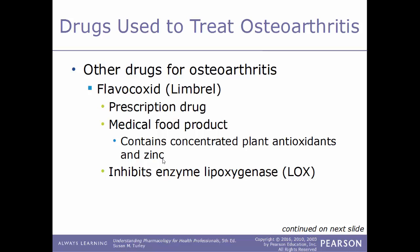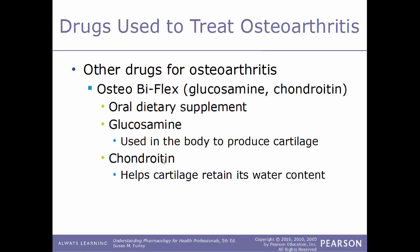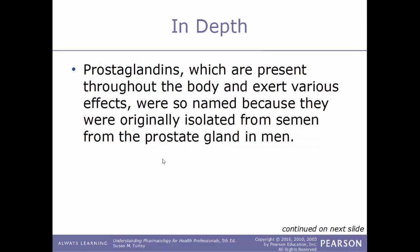Another drug used to treat osteoarthritis is flavocoxid, better known by its trade name Limbrel. This is a prescription medical food product containing concentrated plant antioxidants and zinc. It works by inhibiting the enzyme lipoxygenase, also known as LOX. Osteo Bi-Flex is an oral dietary supplement combining glucosamine and chondroitin — glucosamine is used to produce cartilage, and chondroitin helps cartilage retain its water content.